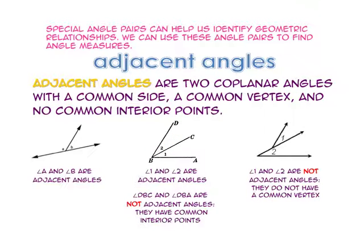Look at this example. Angle 1 and angle 2 are not adjacent because angle 1 and angle 2 have different vertices.